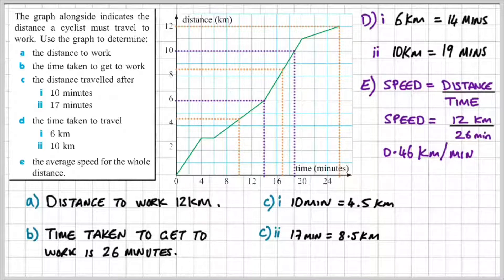However, conventionally, you don't see kilometres per minute. You usually read it as kilometres per hour. So if we multiply this value by 60, because there's 60 minutes in an hour, we will get a total of 27.7 kilometres per hour.